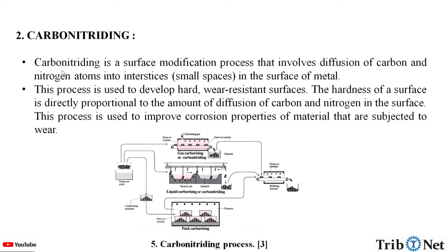What is carbonitriding? Carbonitriding is a surface modification process that involves diffusion of carbon and nitrogen atoms into interstitial small spaces in the surface of metal. This process is used to develop hard, wear-resistant surfaces. The hardness of the surface is directly proportional to the amount of diffusion of carbon and nitrogen in the surface. This process is also used to improve the corrosion properties of materials subjected to wear.